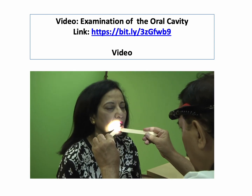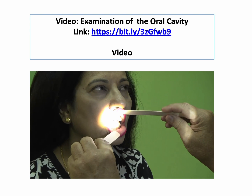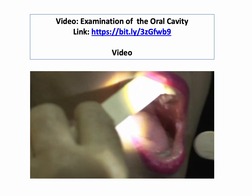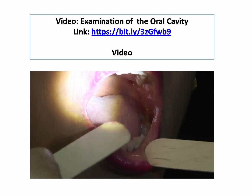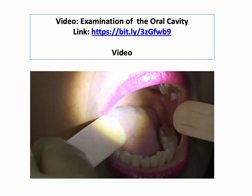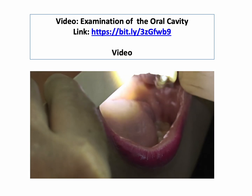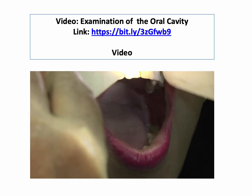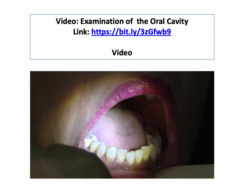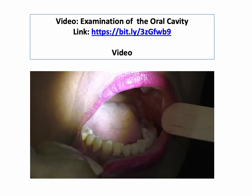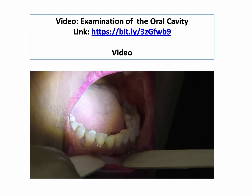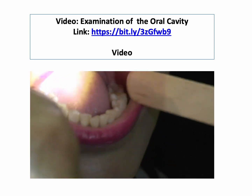We then look at the inner aspect of the gums — the mucosa should be pink in color. Can you open your mouth and chin up a little bit? We look at the teeth for any ridges or any infection, and then we look at the gums for ridges, infection, inflammation, swelling, or gum recession from the tooth. In this case it looks okay.